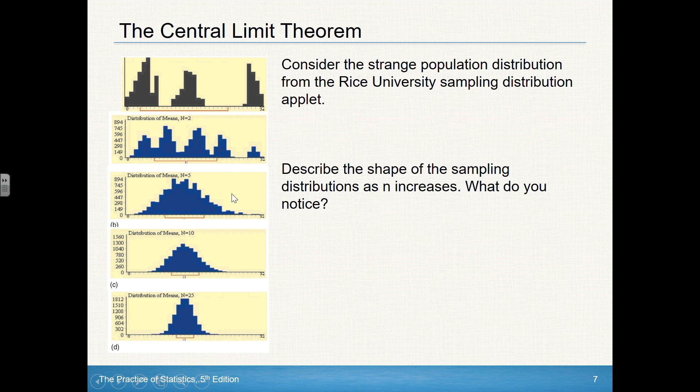So as you increase your sample size, the distribution that is clearly not normal gets closer and closer to normal. Again, what are we thinking about here? We're thinking about the sampling distribution, meaning all samples of the same size. That is what is ending up being approximately normal.